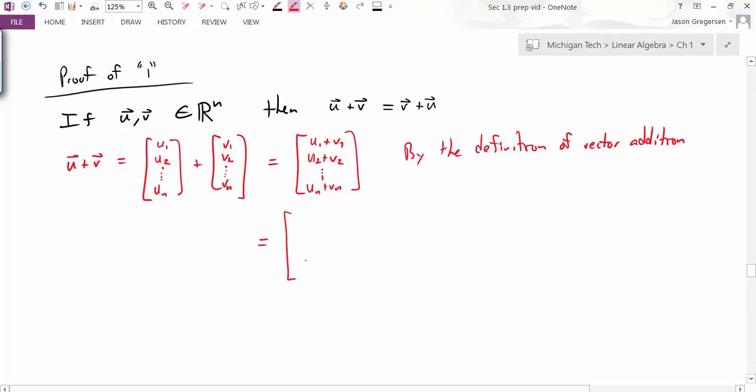But I know that when I add u1 plus v1, because both of those are just real numbers, that this statement is the same as v1 plus u1, v2 plus u2, dot, dot, dot, v_n plus u_n. Now why am I allowed to do that operation? Because each one of those are just real numbers. And I know that I can switch the order of that addition by the commutativity of addition in R. So I know real numbers, I know addition in real numbers is commutative, so I can switch those values.